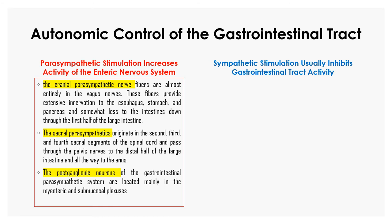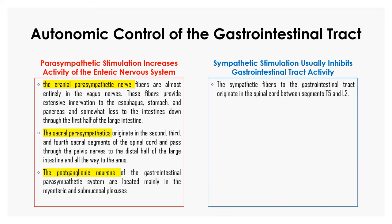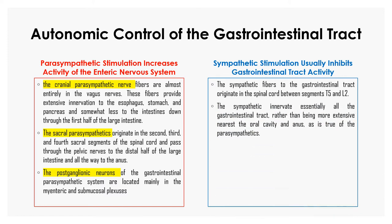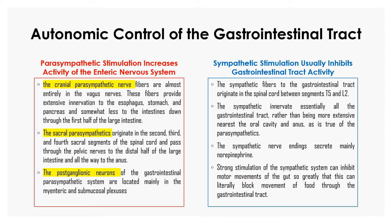Sympathetic stimulation inhibits GI tract activity. The sympathetic fibers to the GI tract originate in the spinal cord between segments T5 and L2. The sympathetic innervation encompasses essentially all of the GI tract rather than being more extensive nearest the oral cavity and anus as is true of the parasympathetic. The sympathetic nerve endings secrete mainly norepinephrine. Strong stimulation of the sympathetic system can inhibit motor movement of the gut so greatly that it can literally block movement of food through the GI tract. Remember: parasympathetic stimulation increases the activity of the enteric nervous system, while sympathetic stimulation usually inhibits GI tract activity.